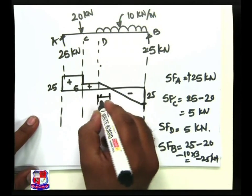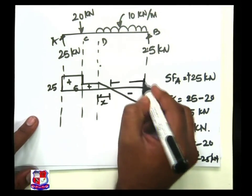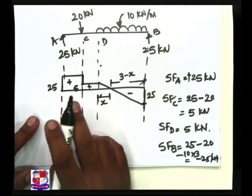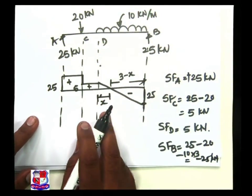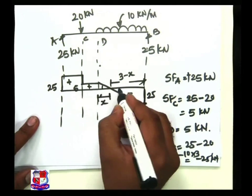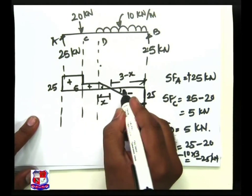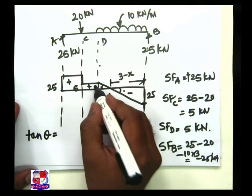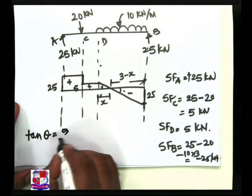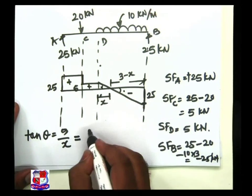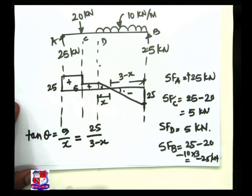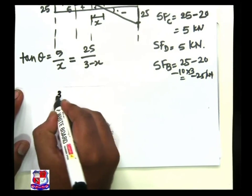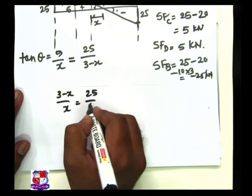Let this ordinate be x, so the other ordinate is 3 minus x. Using the similar triangles approach: both angles are equal (theta), so tan theta equals opposite side over adjacent side. That gives 5 divided by x equals 25 divided by (3 minus x). Simplifying, 3 minus x divided by x equals 25 divided by 5, which equals 5.